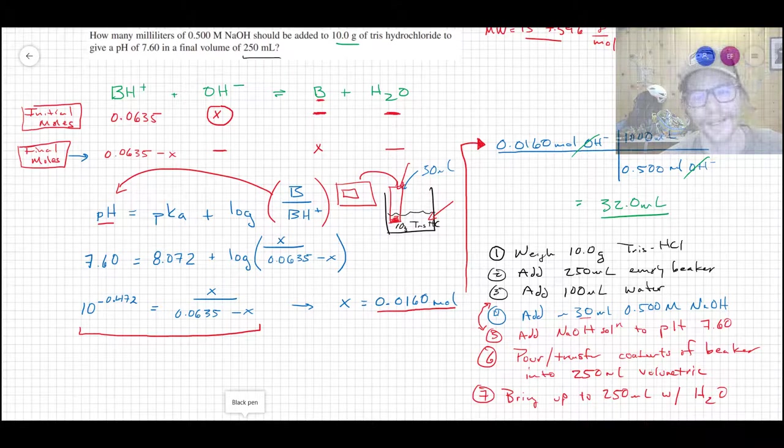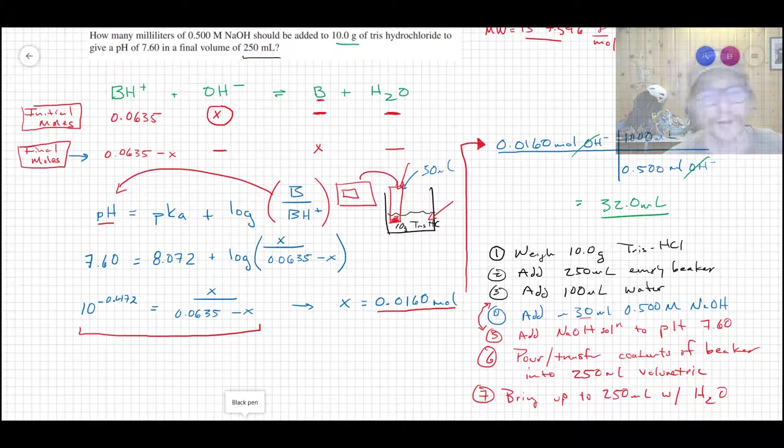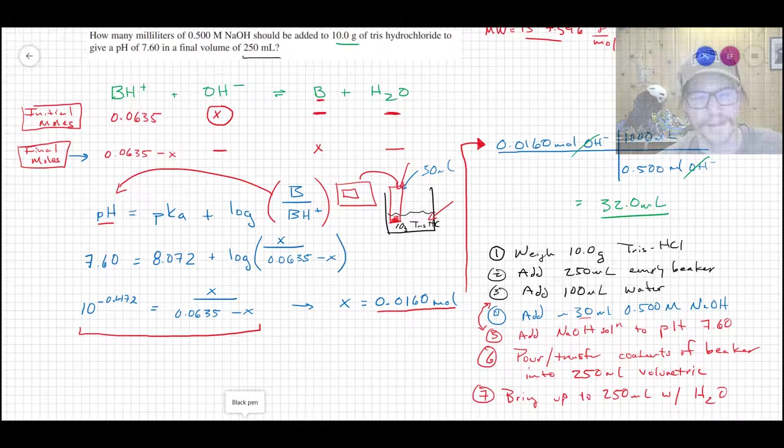In which your dilution factor is going to be so large that the concentrations are going to be low enough that the contribution from water will be important. But for any practical solutions that you're going to make in lab, this is the method that you'll want to use. Mass it out in a beaker, add your solution, add a little bit of water, add a pH electrode that's calibrated, add your base or acid depending on whether you're starting with an acid or base, till you get to the desired pH, transfer that over to the desired volume in the volumetric flask, bring it up to volume, and then you're good to go.